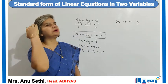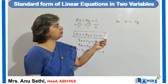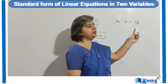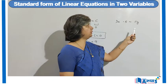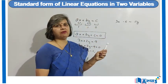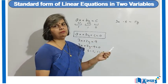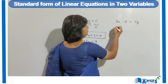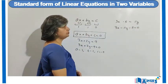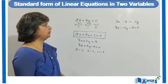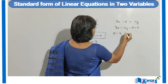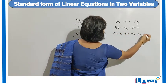Now if we try to convert it into standard form, we need 0 on the right hand side. We have 11y on the right hand side, so we shift it to the left hand side, changing its sign from plus 11y to minus 11y. It becomes 3x minus 11y minus 5 is equal to 0. Comparing with the standard form, we get A as 3, B as minus 11, and C as minus 5.